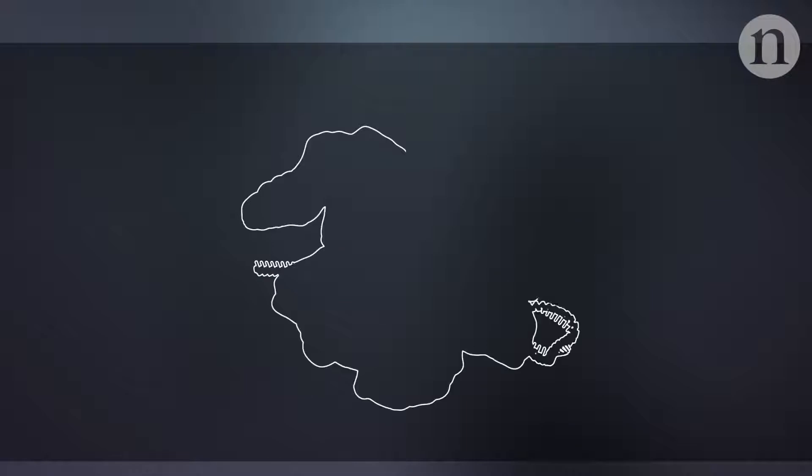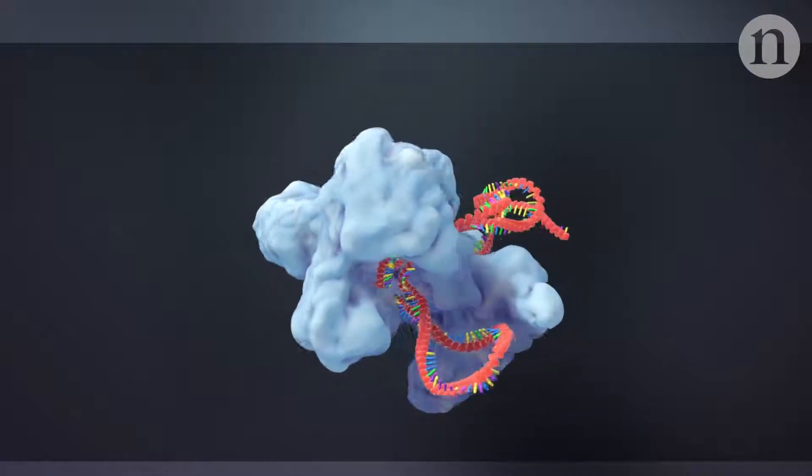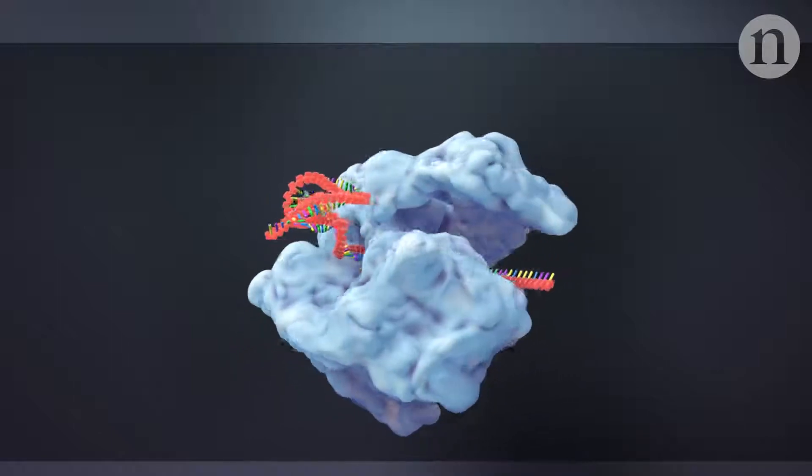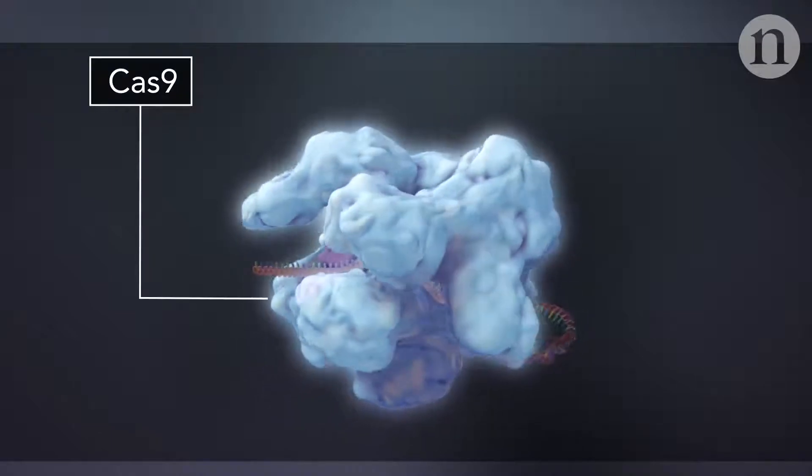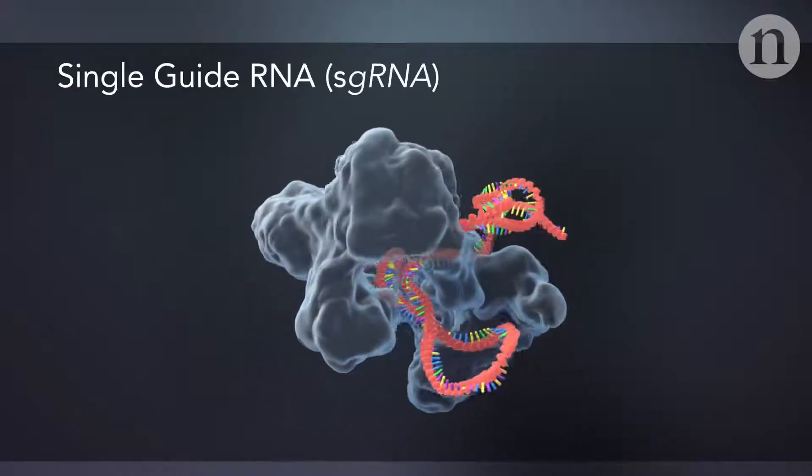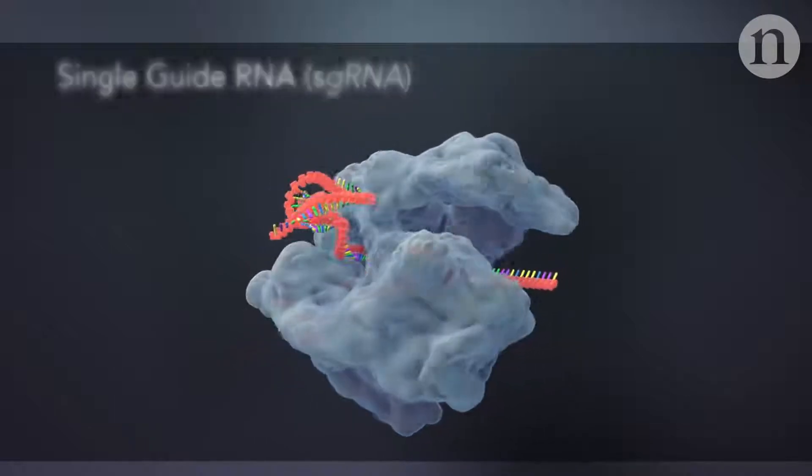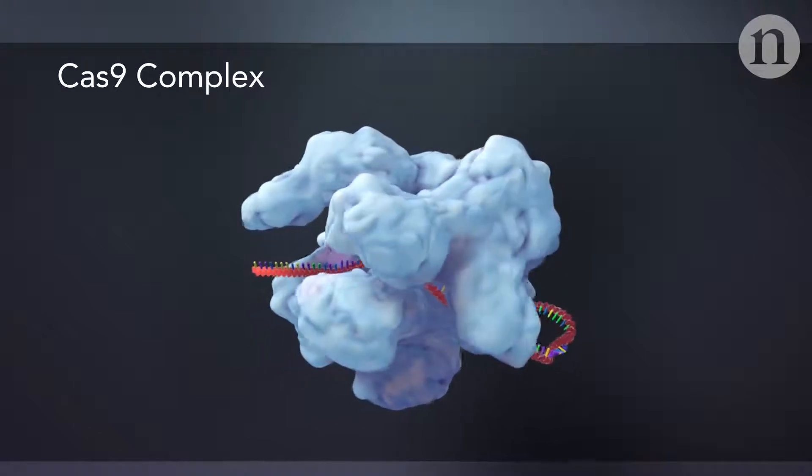Since being discovered in a bacterial immune system, CRISPR-Cas9 has been adapted into a powerful tool for genomic research. There are two components to the system: a DNA cutting protein called Cas9 and an RNA molecule known as the guide RNA. Bound together, they form a complex that can identify and cut specific sections of DNA.